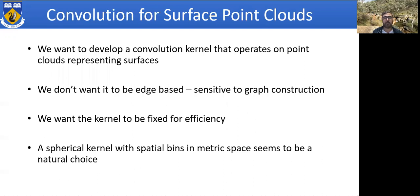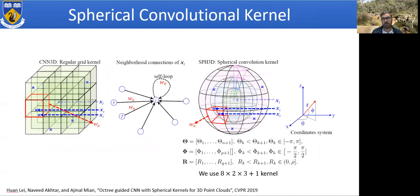Convolution for surface point clouds is what we are interested in. We want to develop a convolution kernel that operates on point clouds representing surfaces. We don't want it to be edge-based because that is sensitive to graph construction. We want the kernel to be fixed for efficiency. An enhanced spherical kernel with spatial bins in metric space seems to be a natural choice. With this motivation we design a spherical kernel and show it is better suited for this operation compared to the grid-like 3D CNN kernel. The kernel is defined by azimuth angle, elevation angle, and radius.